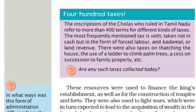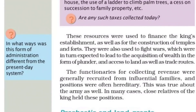So this included taxes for house repairs, for using a ladder to climb palm trees, and taxes related to choosing an heir for family property — all recorded in the Chola inscriptions as part of their extensive taxation system.